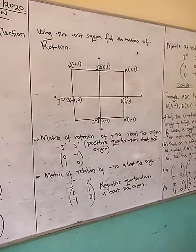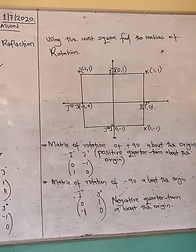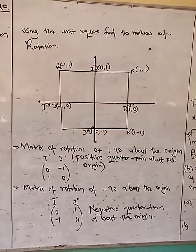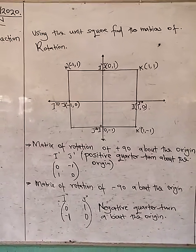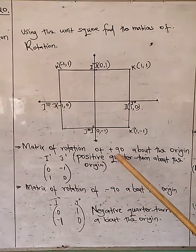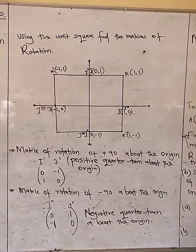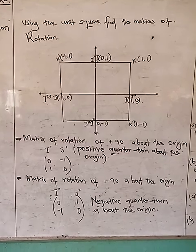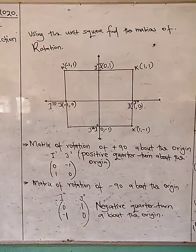The same unit square can be used in finding the matrices of a transformation — that is, rotation. In rotation, we are going to consider rotating that unit square. We have types of rotation: a rotation of positive 90 degrees about the origin, which is the same as a positive quarter turn about the origin. A negative quarter turn about the origin is a rotation of negative 90 degrees about the origin. Let us look at the diagram.